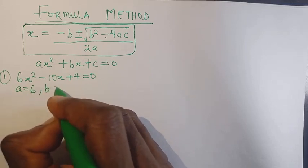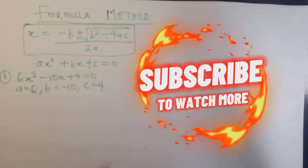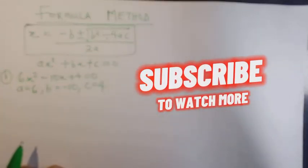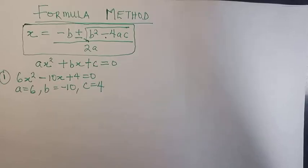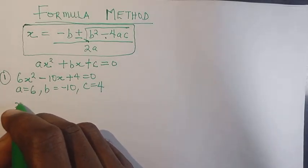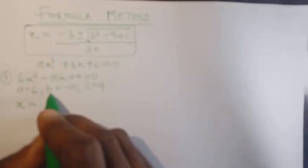Now that I've identified a, b, and c, the next thing I have to do is slot these values into the formula. So x equals to minus b — remember b is minus 10 — so x equals to minus b.